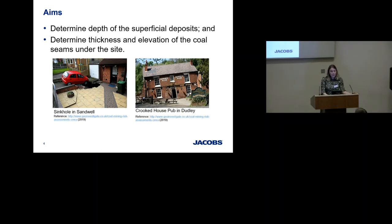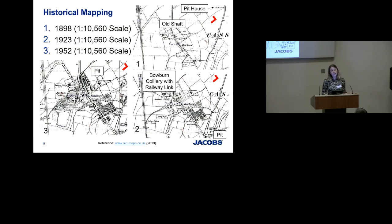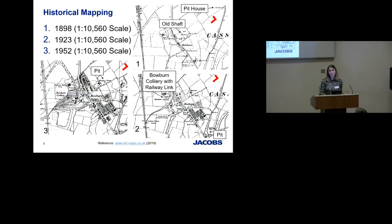Being located on a coalfield, the aims of the ground investigation were to determine the depth of superficial deposits and the thickness and elevation of the coal seams beneath the site. I've included two pictures showing the hazardous nature of developing on coalfield land - one showing what can happen quickly overnight, and another showing slower effects over time. Looking at historical maps of Bowburn, we can see old shafts, pit houses, and Bowburn colliery linked to the regional railway line - indicating a significant amount of coal came out of this area.